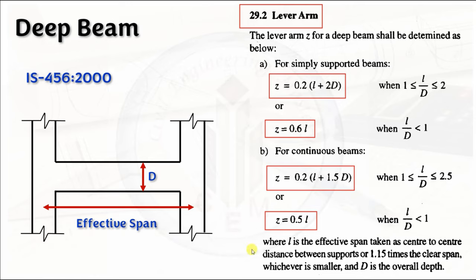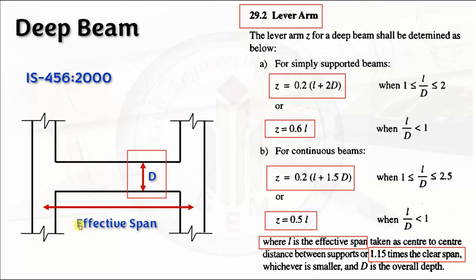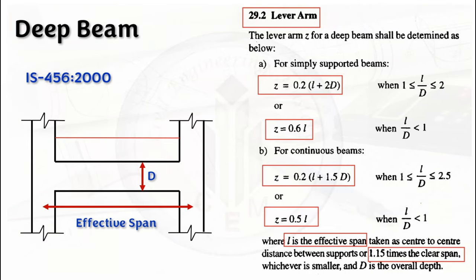For a continuous beam, z equals 0.5l when l/d is less than 1. Here, l is the effective span taken as the center-to-center distance between supports or 1.15 times the clear span, whichever is smaller. And d is the overall depth. The effective span is the center-to-center distance between supports, while the clear span is the clear distance between the faces of the supports.